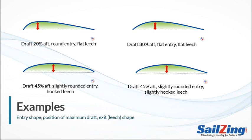The lower right sail's leech is slightly hooked — a subtle difference from the sail just above it. You can tell the difference by looking at the angle of the trailing edge of the two sails. These sails all perform differently in various conditions, which is the topic of the rest of this lesson.